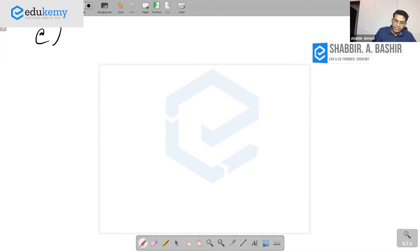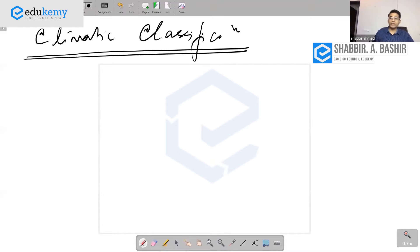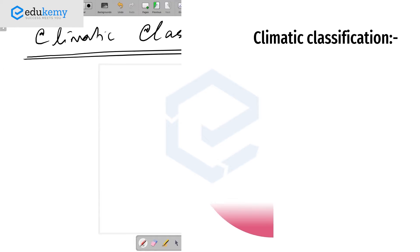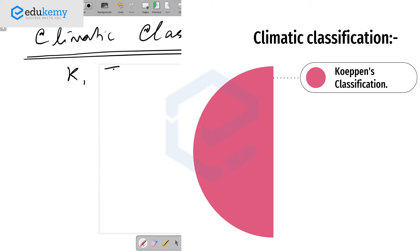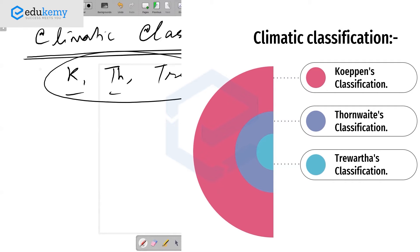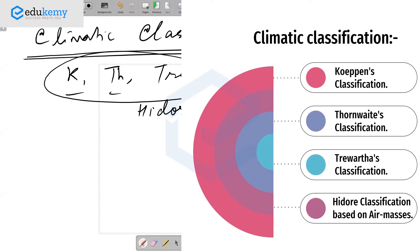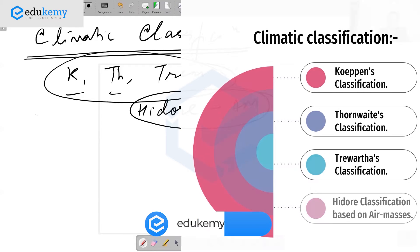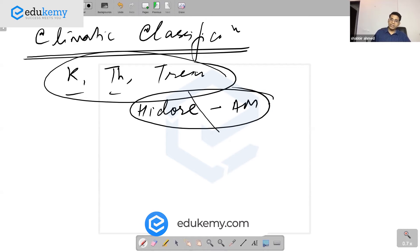Climatic classification. Every year you get a question from this topic. You have Kopen, you have Thornwhite, and you have Trewartha — do not go beyond these three. Your textbook also has the climatic classification of Hidor, who gave a classification based on air masses, but I will discourage that.